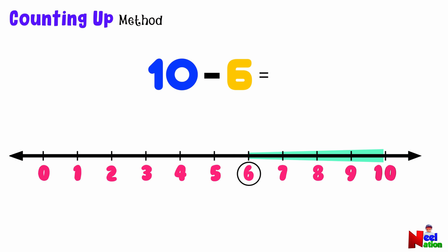Starting from 6, we make our first jump to 7, second jump to 8, third to 9, and final jump to 10. How many jumps did we make? 4, that's right. So 10 is 4 numbers away from 6. In other words, the difference between 10 and 6 is 4, meaning 10 minus 6 equals 4.